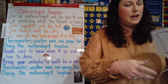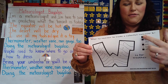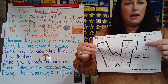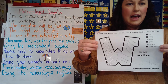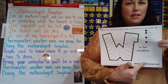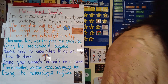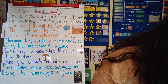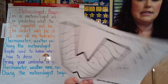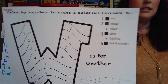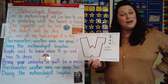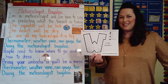It says color by number to make a colorful rainbow W. W is for weather. When it copied, friends, it was kind of hard to see, but just imagine this is one, two, three, four, five, and six — and then you color those the same colors. Don't forget to trace the word weather. I'll write that down for you, friends, just in case you forget it: one, two, three, four, five, six. So friends, go ahead and write the numbers right next to that W and go ahead and color it. When you're done coloring this, I want you to share it with your teacher on Seesaw.